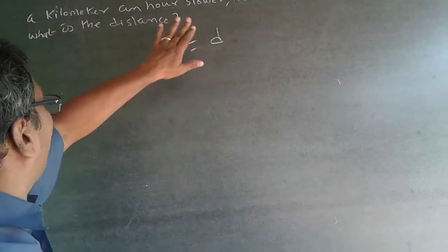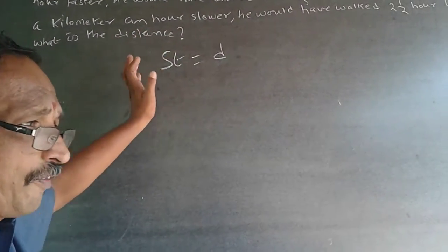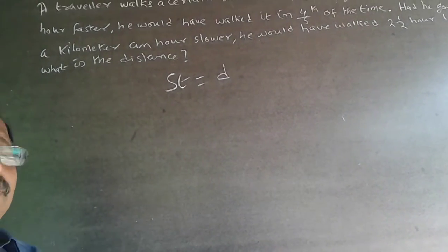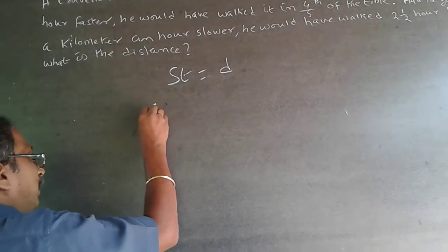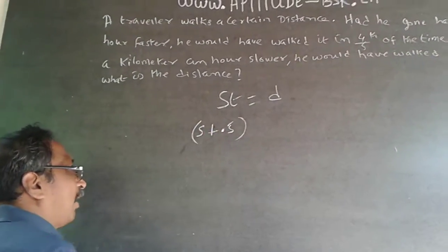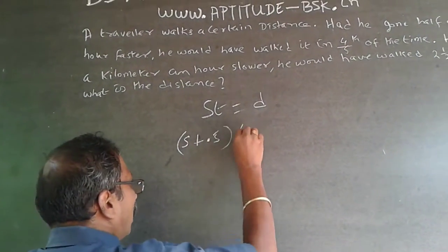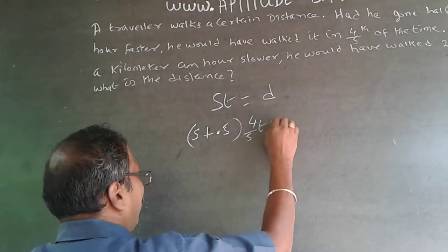Had he gone half a kilometer hour faster means, if this is S, he would have traveled half a kilometer more. Supposing S is 10, he would have walked at 10.5. So it will be S plus 0.5. He would have done it in 4/5 of the time, so it will be 4 by 5 of T will be equal to D.